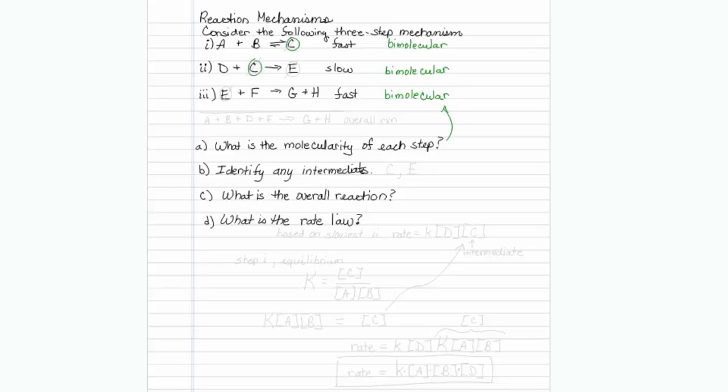So C is on both sides, so it's not going to wind up in the final reaction. I think C would be a choice, and it appears that E is also on both sides of the arrow. So for this example, C and E.